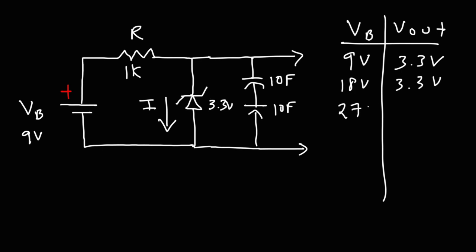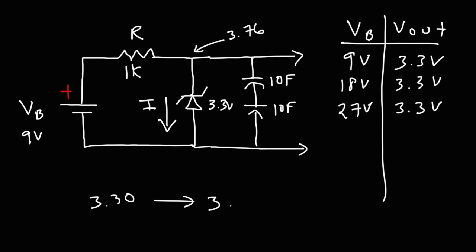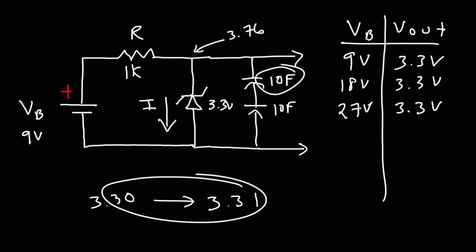Increasing the battery voltage to 27 volts still kept the output voltage at 3.3. Even though without the capacitors the output would be 3.76, it didn't really change much. To give you a sense of the time frame: starting at 3.3 volts, it would take a good 5 to 10 seconds to change to 3.31 with these values. If you were to use a 100 farad capacitor, this would take 10 times longer to go from 3.30 to 3.31.